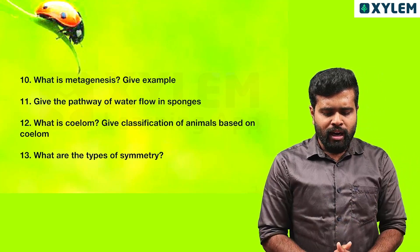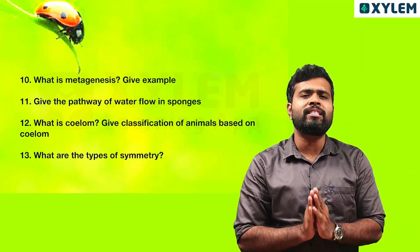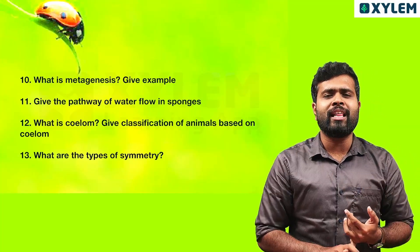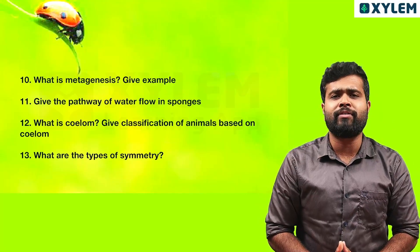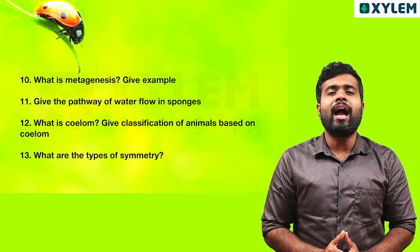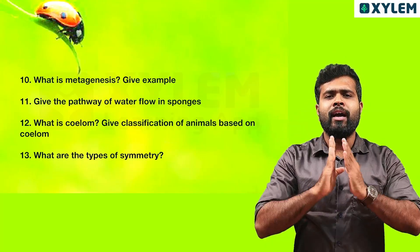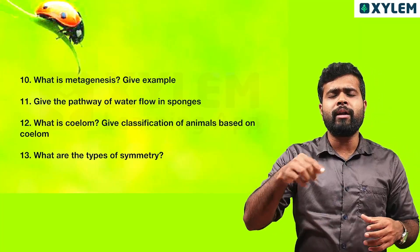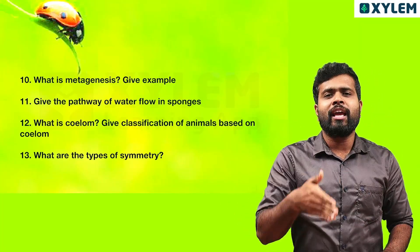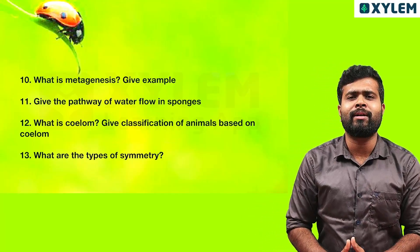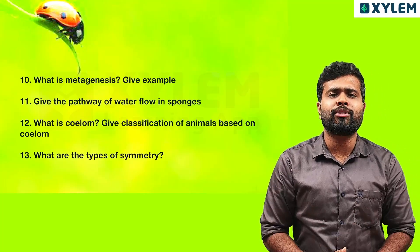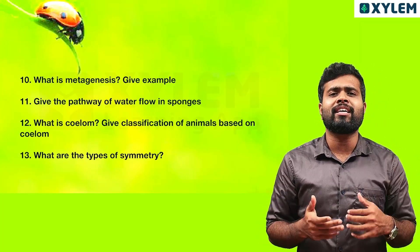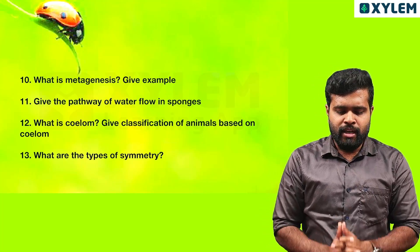Next question: what are the types of symmetry? We have three classifications. Asymmetry — cannot be divided into equal halves in any plane, seen in Porifera. Bilateral symmetry — one plane divides the body into two equal halves. Radial symmetry — any plane through the central axis divides into equal halves, seen in Cnidarians and Ctenophora, including comb jellies.